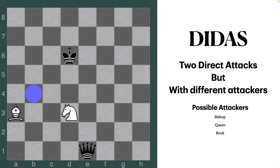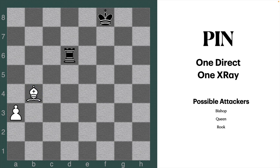The next tactical motif is what I call a DDAS — a Discovered Double Attack. It's also two direct attacks, but what's different from the fork is that these two attacks are made by two different attackers. For example, a knight on b4 moves to d3, and now the bishop discovers an attack on the king while the knight is attacking the queen. There's a double attack: one discovered, one direct, from two different pieces on two different targets. This is why a DDAS is different from a fork.